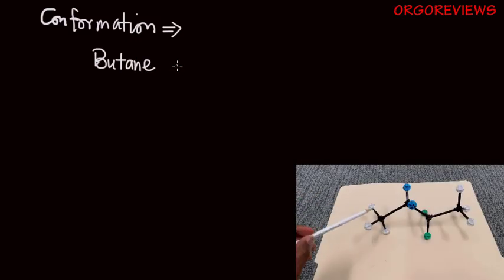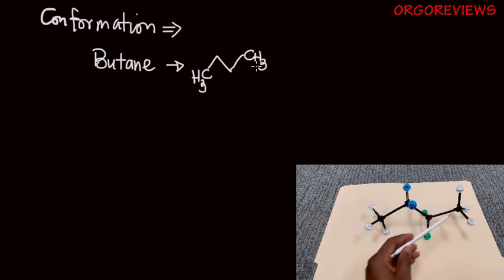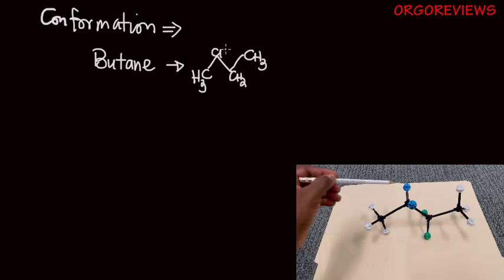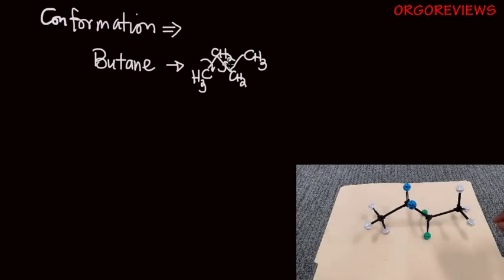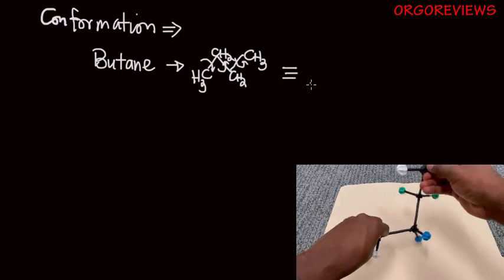Conformations tells us how molecules are arranged by rotating some of the bonds, especially single bonds. Let's illustrate this with the structure of butane. Butane is a 4-carbon hydrocarbon. It has a CH3 group at the end and CH2 groups in between. These single bonds can be rotated around 360 degrees.